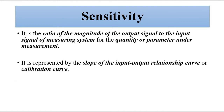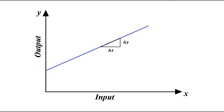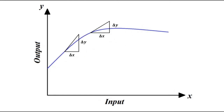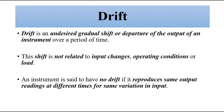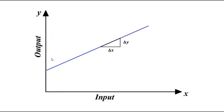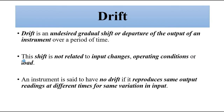This input-output relationship curve is called the calibration curve. It can be linear or non-linear, and the sensitivity is calculated by determining the slope of the curve at various points. Drift comes into play whenever there is an undesired gradual shift in this input-output relationship curve from its predefined or predicted trajectory — whenever there is any departure or deviation from that.